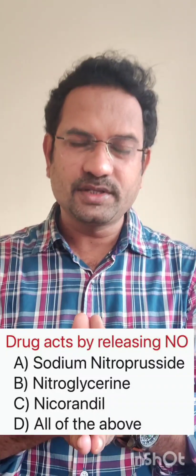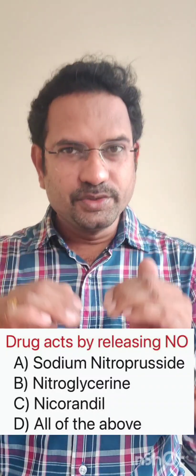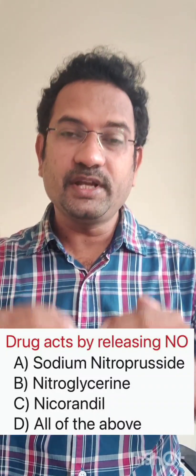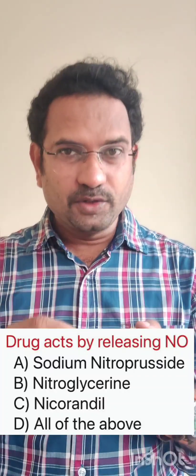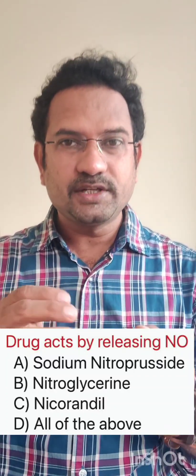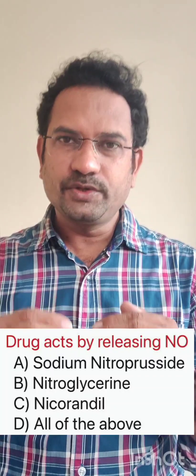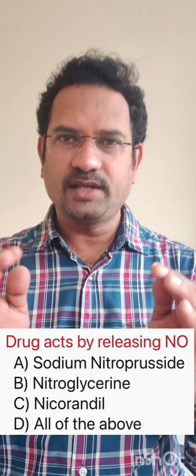Both nitroglycerin and nitroprusside reduce blood pressure, so they can be used in hypertensive emergencies. Nitroglycerin is used to treat acute angina pectoris, and nicorandil is also used to treat angina pectoris. So the answer is all of the above.